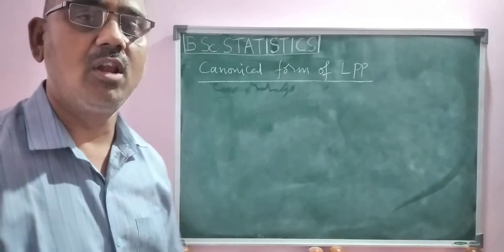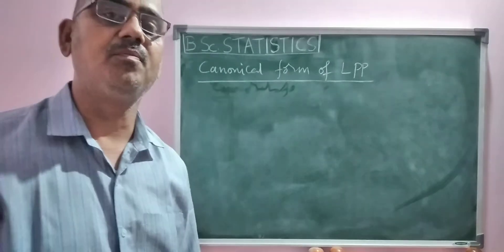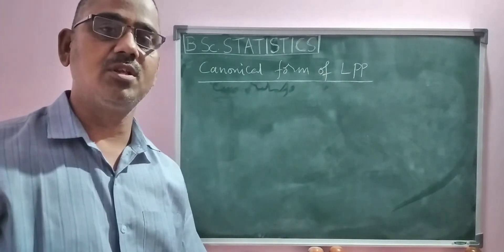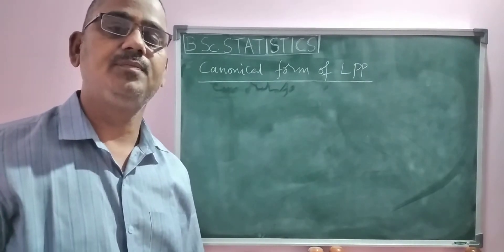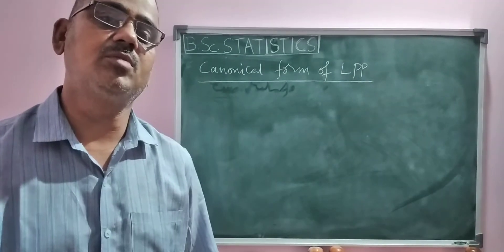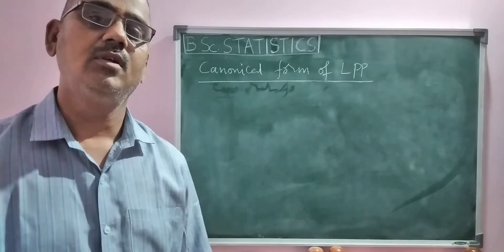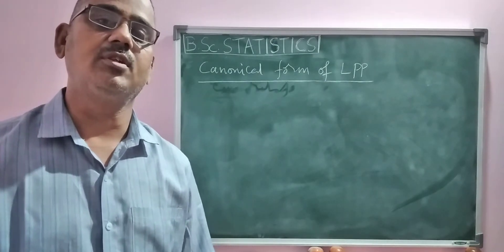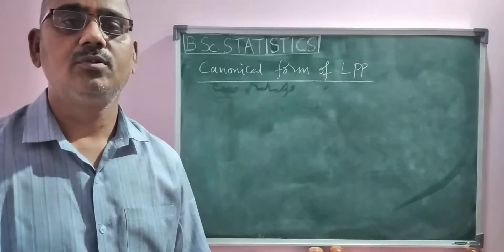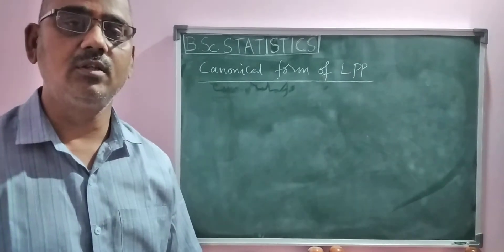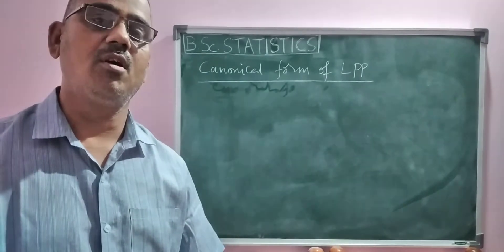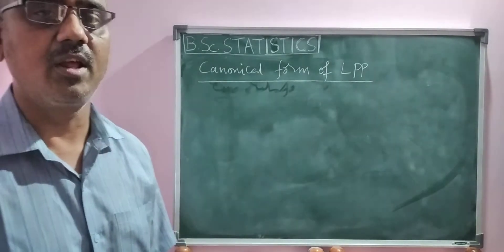What is the Canonical Form of Linear Programming Problem? The objective function must be in maximization type. The constraints must be less than or equal to. And non-negative restrictions, which are always greater than or equal to 0. These are the three important properties of the Canonical Form of Linear Programming Problem.